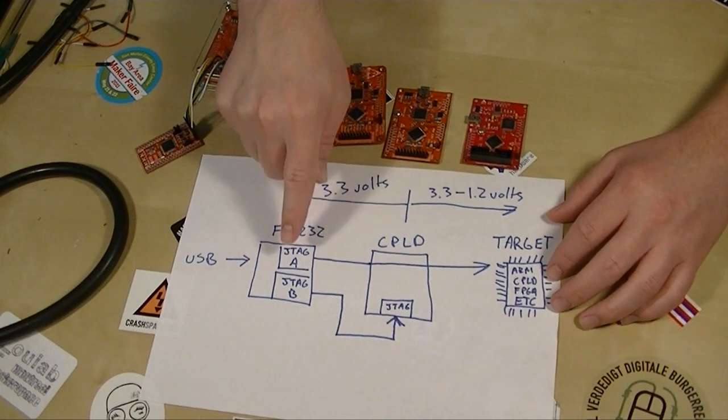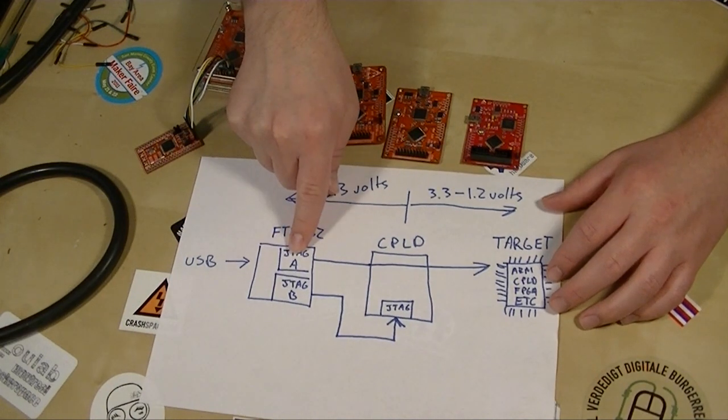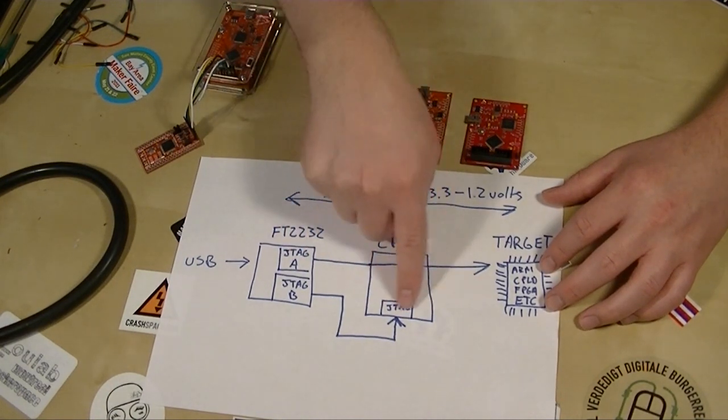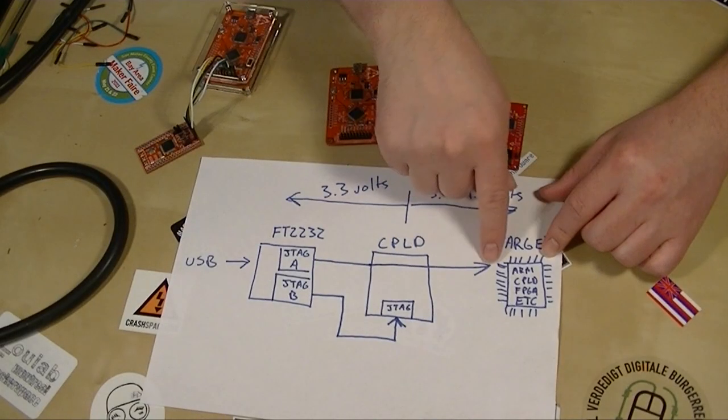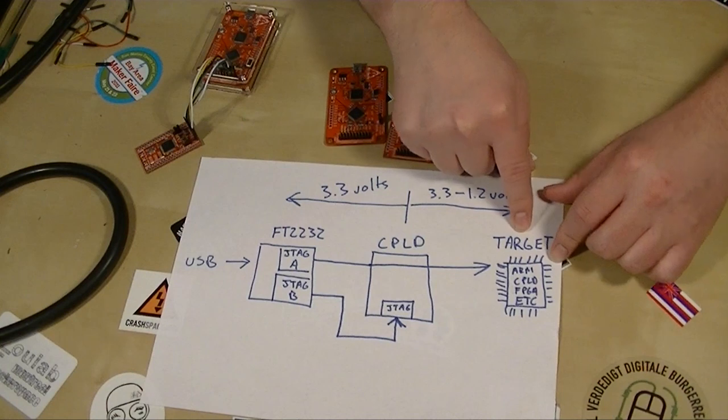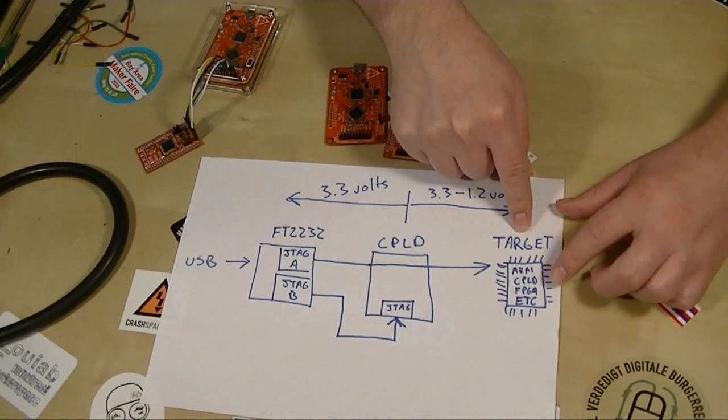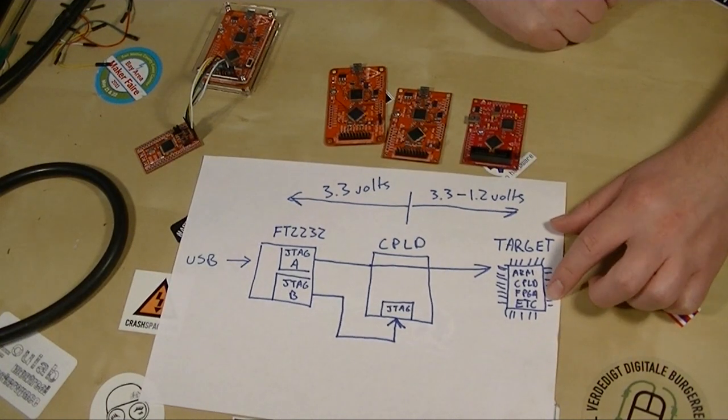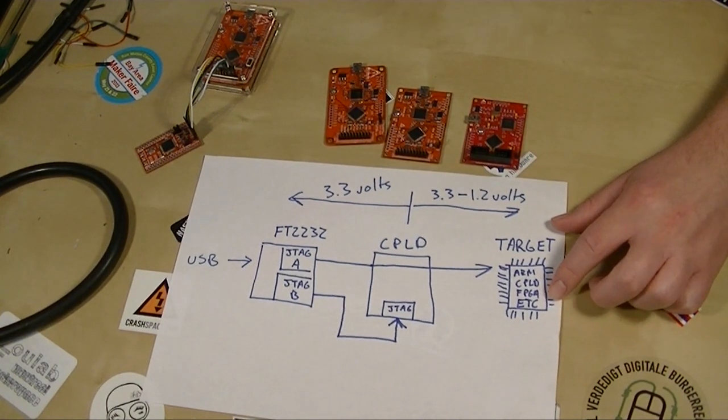It takes a USB signal and converts it into two JTAG channels — not just JTAG, but also serial, SPI, I2C, and some other stuff. But the most important thing we're after are these two JTAG channels. Most manufacturers just use JTAG A, send it through some logic chip to shift the voltages and make it compatible with whatever their device is using, then output it on a header to whatever the target device is — whether it's an ARM, a CPLD, a field programmable gate array, etc.